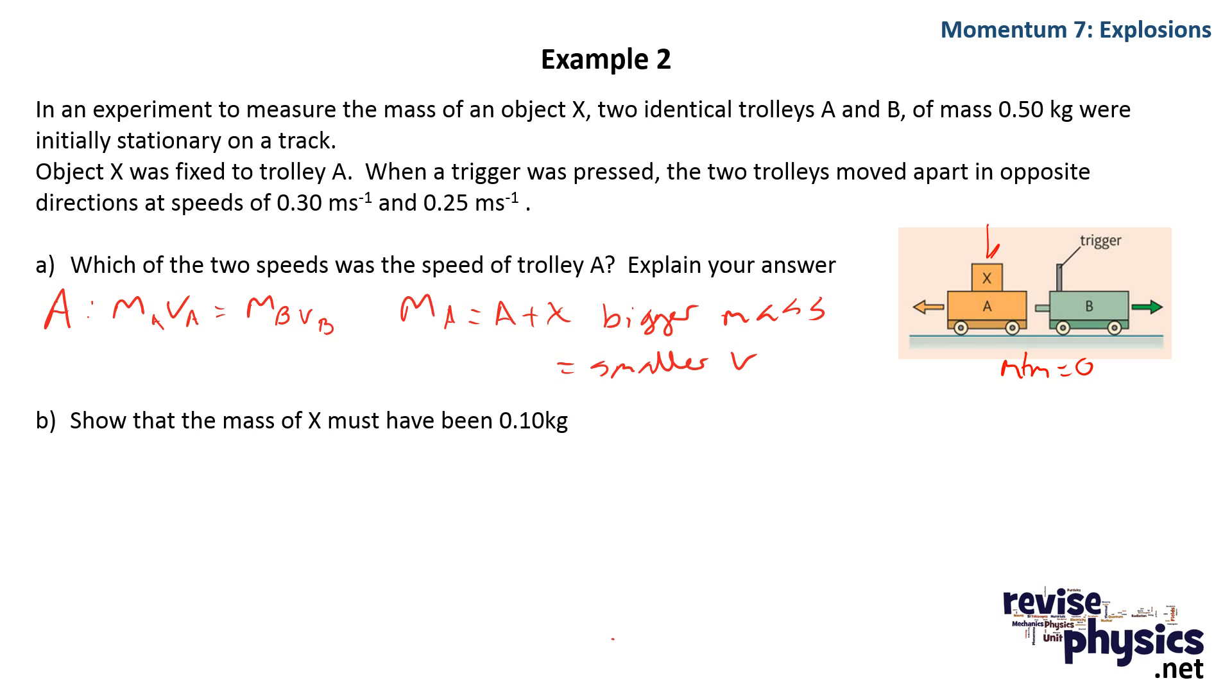but an extra mass of x has been added to trolley A. There's a spring between them that when a trigger is fired will exert a force, and that force is going to be equal and opposite on both of those trolleys. We know the masses of the trolleys are 0.5 kilograms.